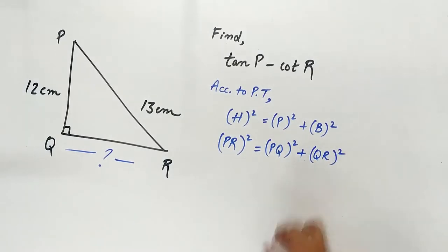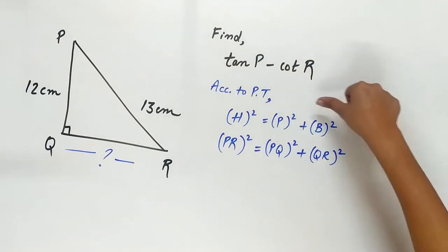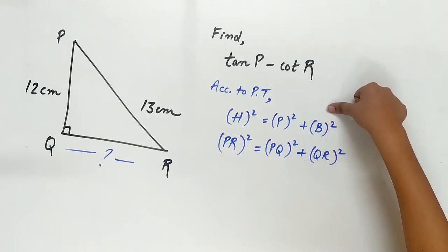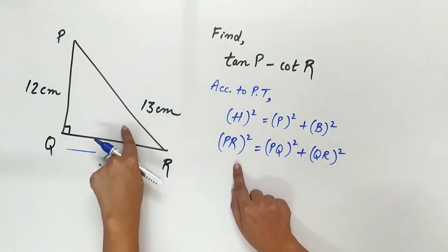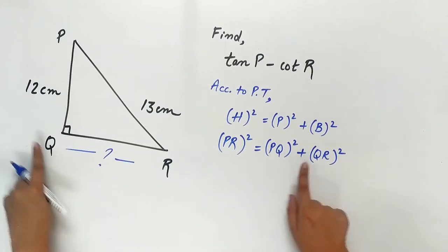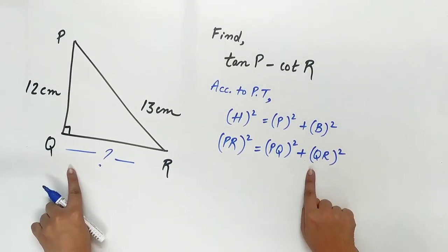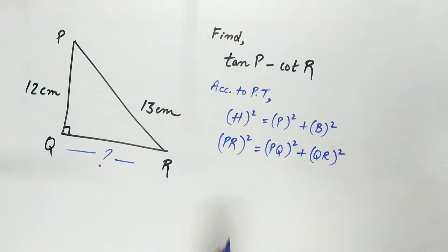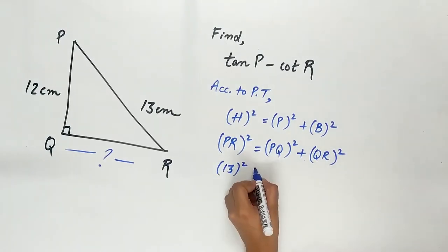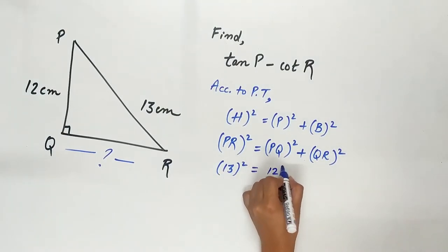Pythagoras theorem says hypotenuse square equals perpendicular square plus base square. Hypotenuse is PR, perpendicular is PQ, base is QR. Let's substitute the values. PR is 13, PQ is 12.